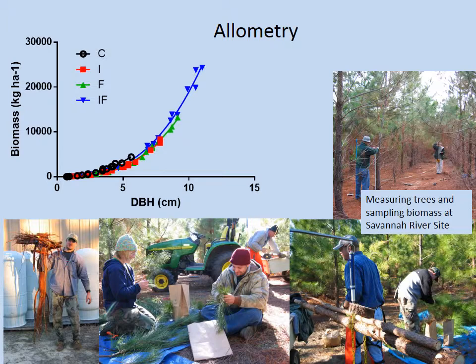It's hard to measure tree biomass, tree leaf area, or the biomass of a forest. However, using allometry we can dissect a few trees and develop relationships that describe how tree parts scale with size. Once we have allometric relationships for a tree species, we can use them to estimate difficult-to-measure structural features based on simple measurements.